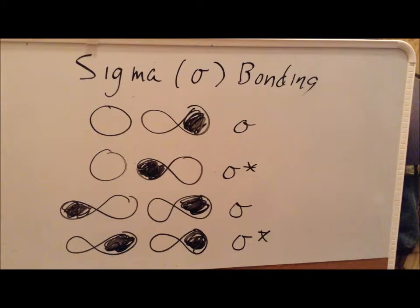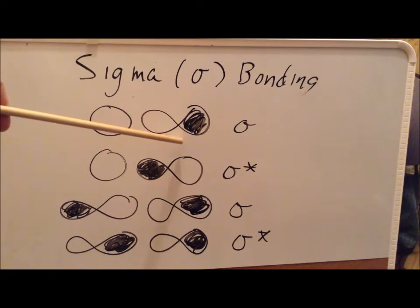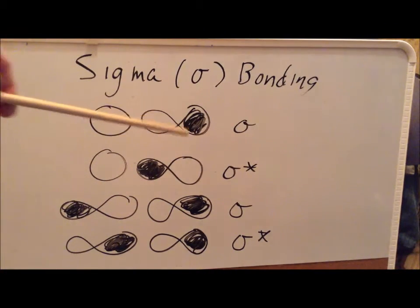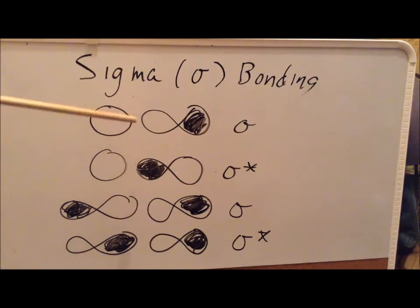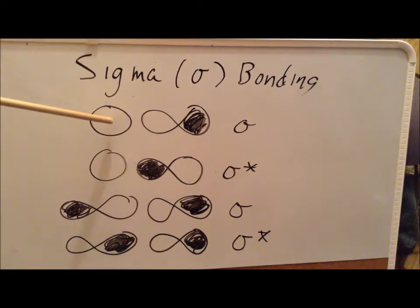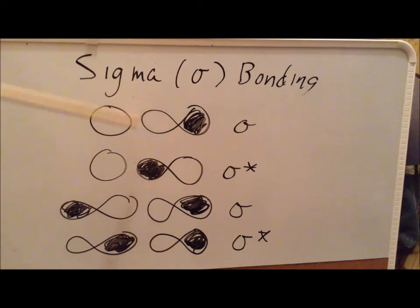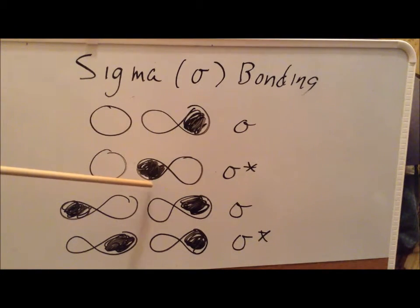Not only can we have sigma bonds between two s orbitals, we can have other combinations. For example, here we have an s orbital on one atom and a p orbital on the other, where the p orbital is pointed toward the s orbital. The overlap region is where these interact. Since both lobes in that region are open — the same phase — this is a sigma bonding orbital. If we reverse the phases on the p orbital so the filled end is closer to the open s orbital, the different phases give us a sigma antibonding orbital.